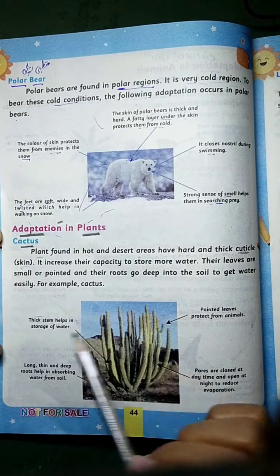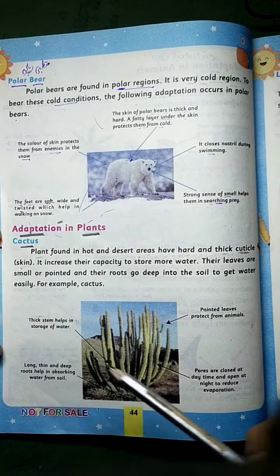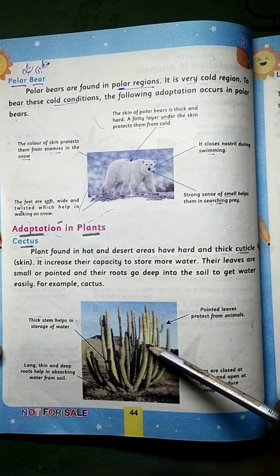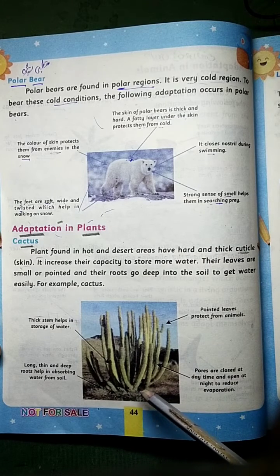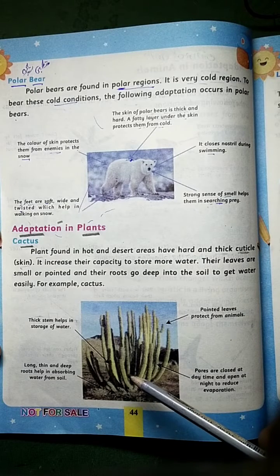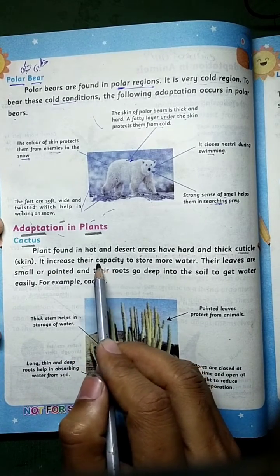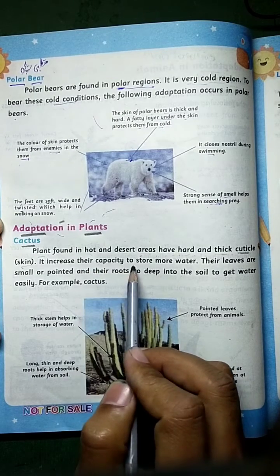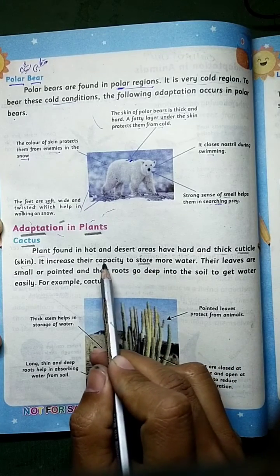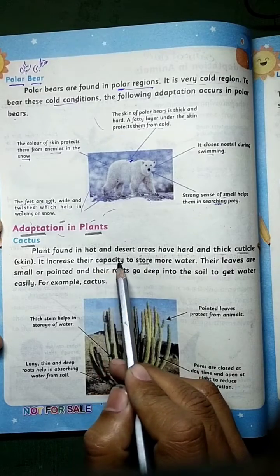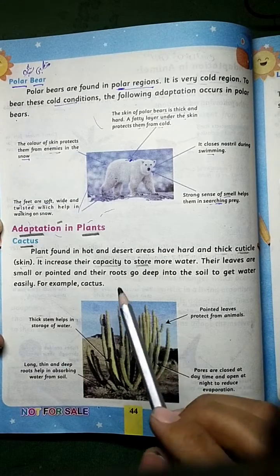This hard and thick skin — chamda — protects the plant. The mazboot and sakt skin helps prevent water loss from the plant. This adaptation increases their capacity to store more water — yeh inka capacity zyada karti hai to store more water. The plant's capacity and ability to store water is increased.